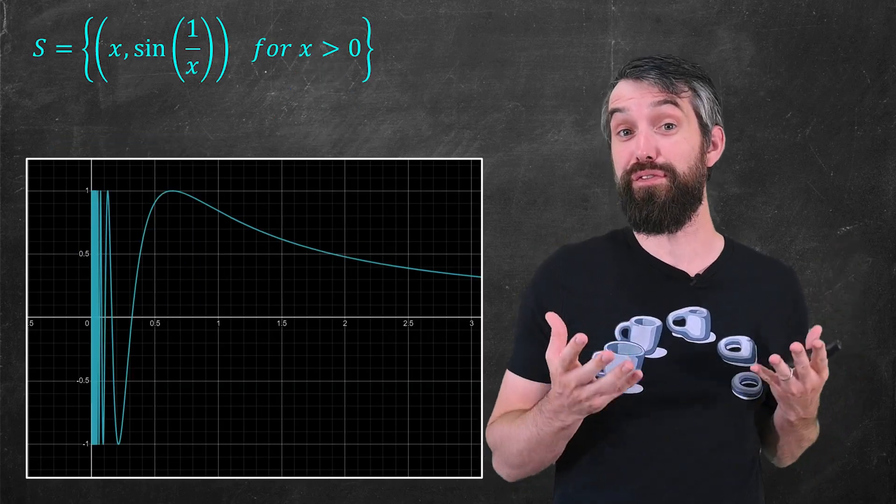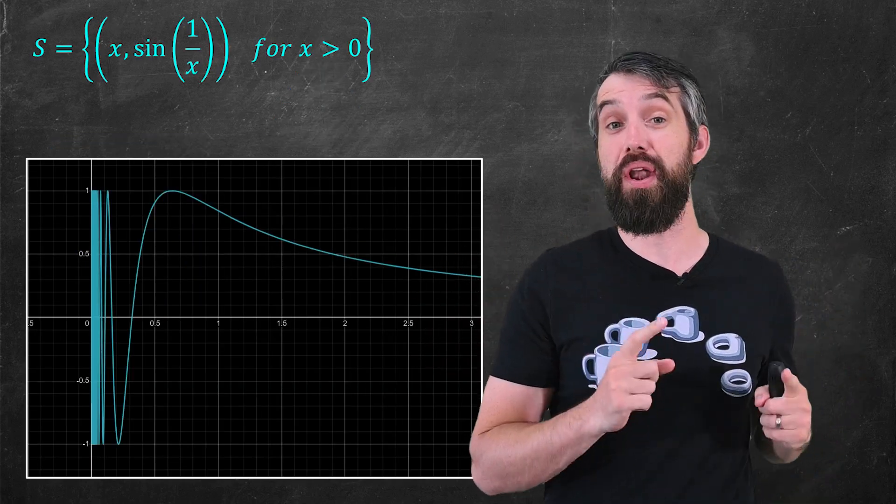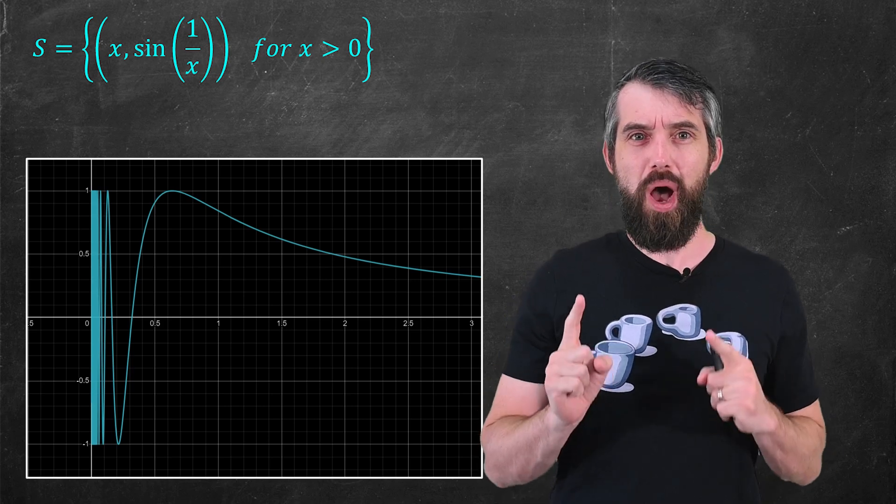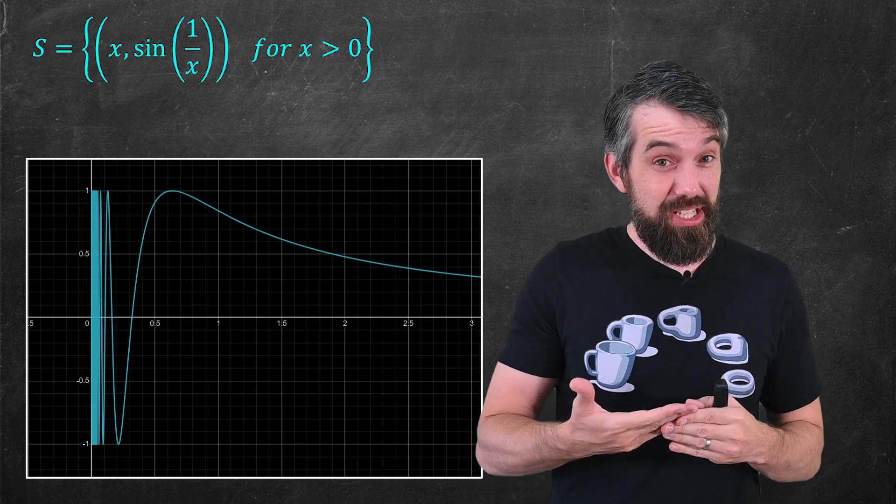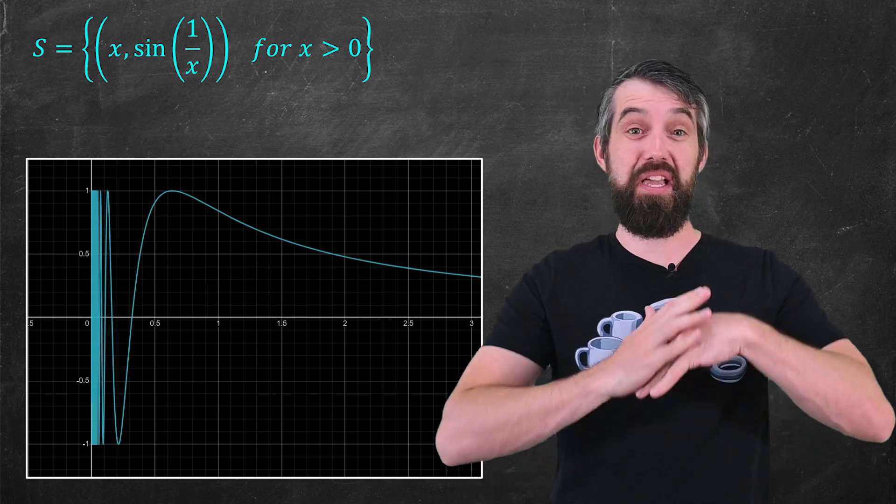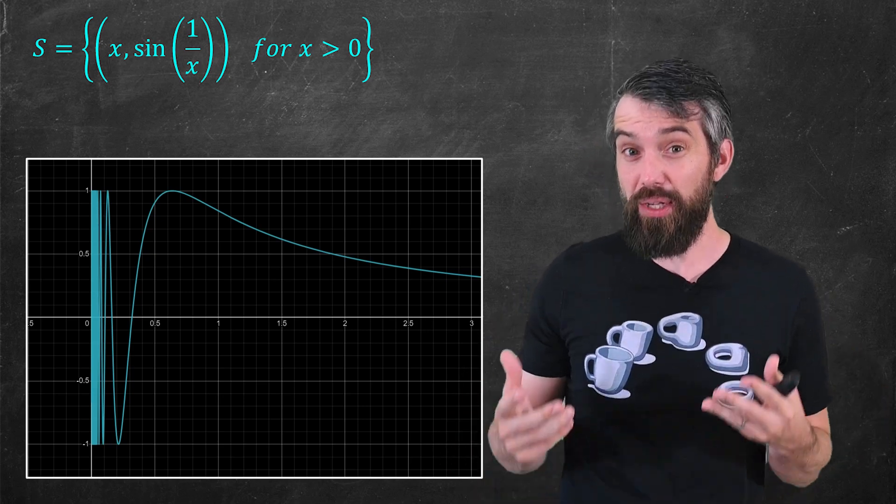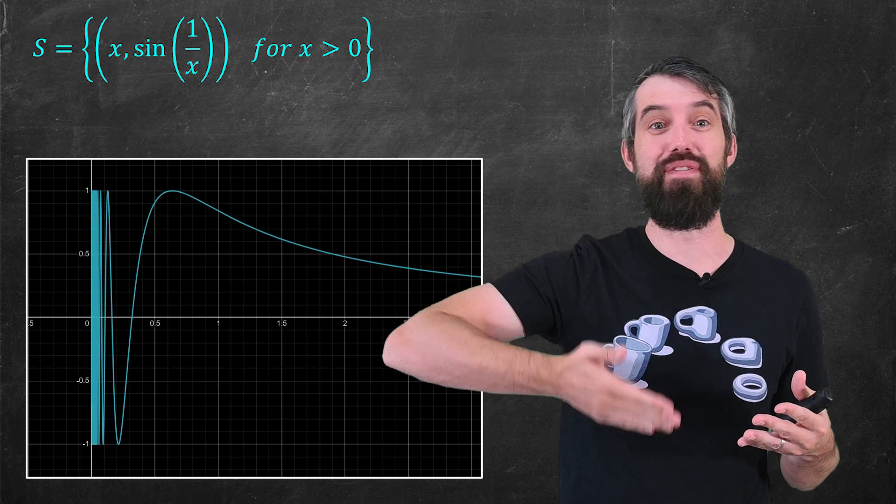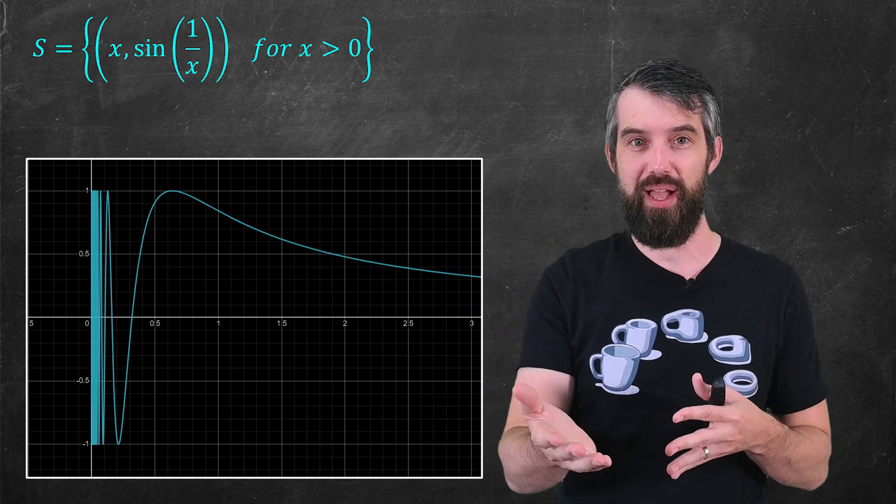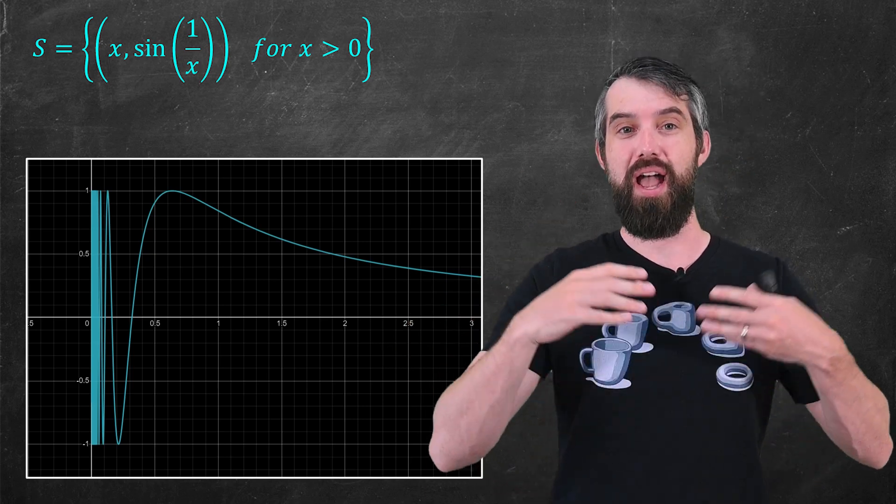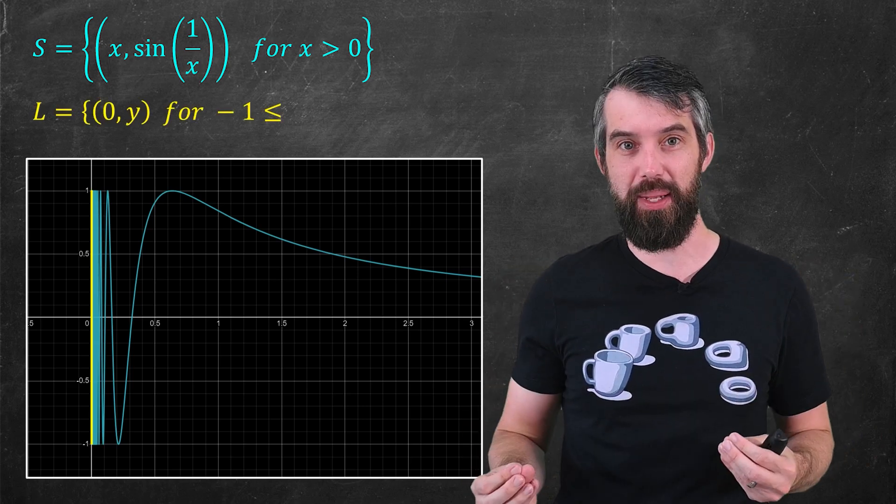Consider, for instance, the graph of the function sine of 1 over x. Because it's 1 over x, as x goes to 0, 1 over x becomes enormous. And as a result, sine starts oscillating faster and faster and faster the closer you get to 0. In calculus, we might have called this an oscillatory discontinuity.